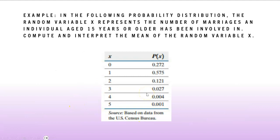So here's an example. In this following probability distribution, the random variable X represents the number of marriages an individual age 15 years or older has been involved in. So you want to compute and interpret the mean of the random variable X. This means that the probability of a randomly selected individual 15 or older being involved in zero marriages is 0.272, being involved in one marriage is 0.575, and so forth. As you can see, the highest is 0.575 and the lowest being five.